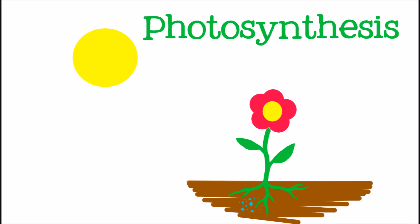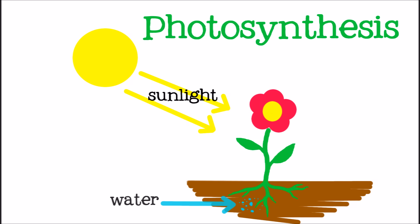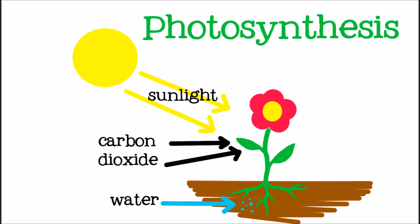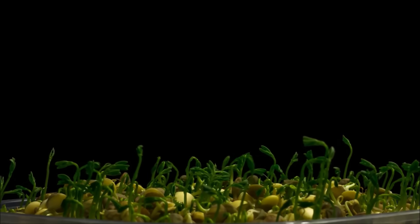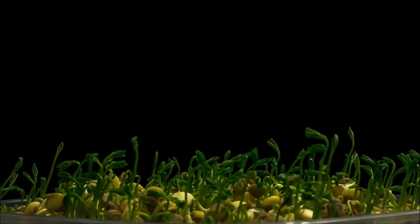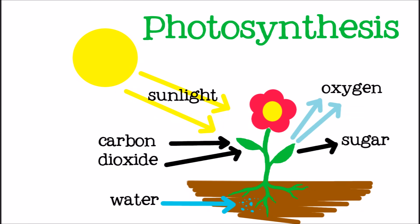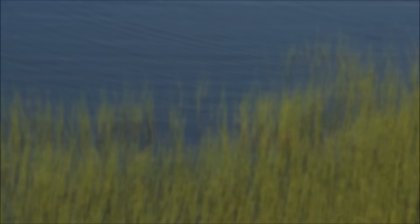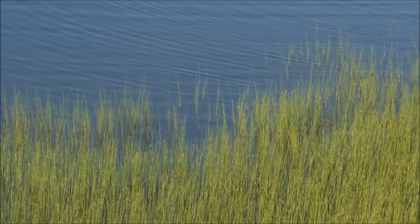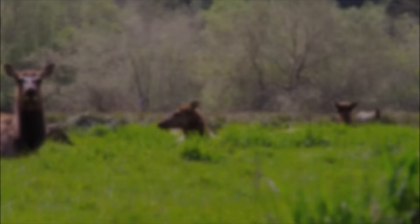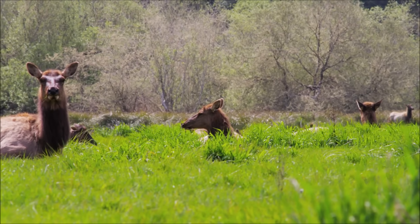During photosynthesis, plants use the sun's energy to change water and carbon dioxide into a kind of sugar. They use this sugar to grow and develop, and store the extra in their leaves, roots, or fruits. In addition to sugar, plants produce oxygen during photosynthesis. Since plants do not need the oxygen, they release it into the atmosphere, where animals and people can breathe it in.